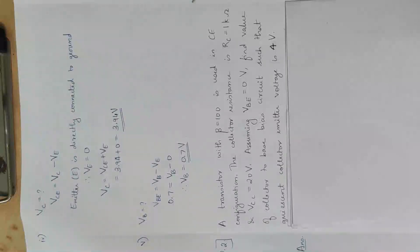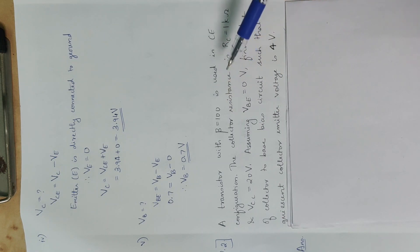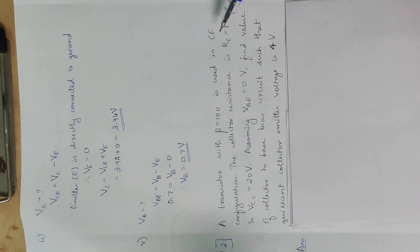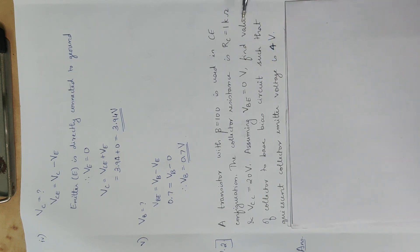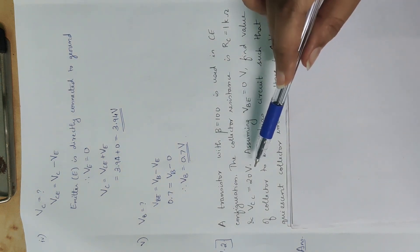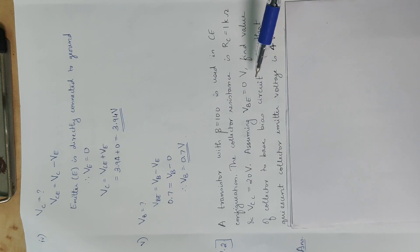The next problem is related to collector-to-base bias circuit. A transistor with beta equal to 100 is used in common emitter (CE) configuration. The collector resistance RC equals 1kΩ and VCC, the supply voltage, equals 20V. Assuming VBE equal to 0V, that is the base-emitter voltage is 0V.